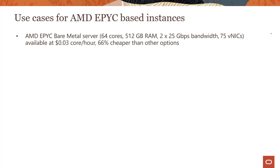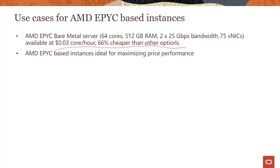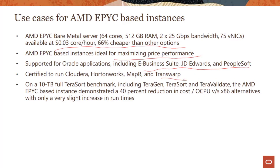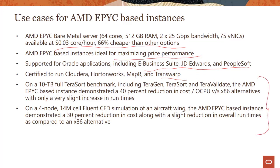For AMD EPYC-based instances, the first thing is they are cheaper — about 66% cheaper than other options, making them predominantly ideal for maximizing price performance. Anytime you are concerned about price performance, you can go with the EPYC AMD instances. All Oracle apps are certified to run on AMD. There are various scenarios like big data, HPC, and computational fluid dynamics where you can run AMD instances, and the numbers show they really deliver in that price-performance range.